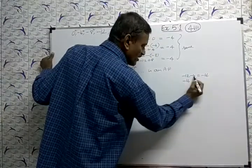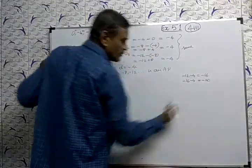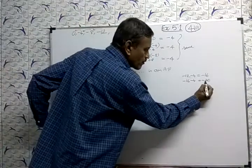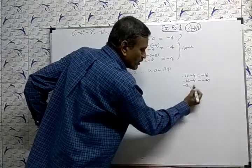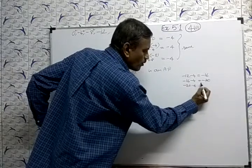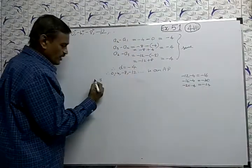-16, again minus 4 is -20. Again, -20 minus 4 is -24. 3 more terms.